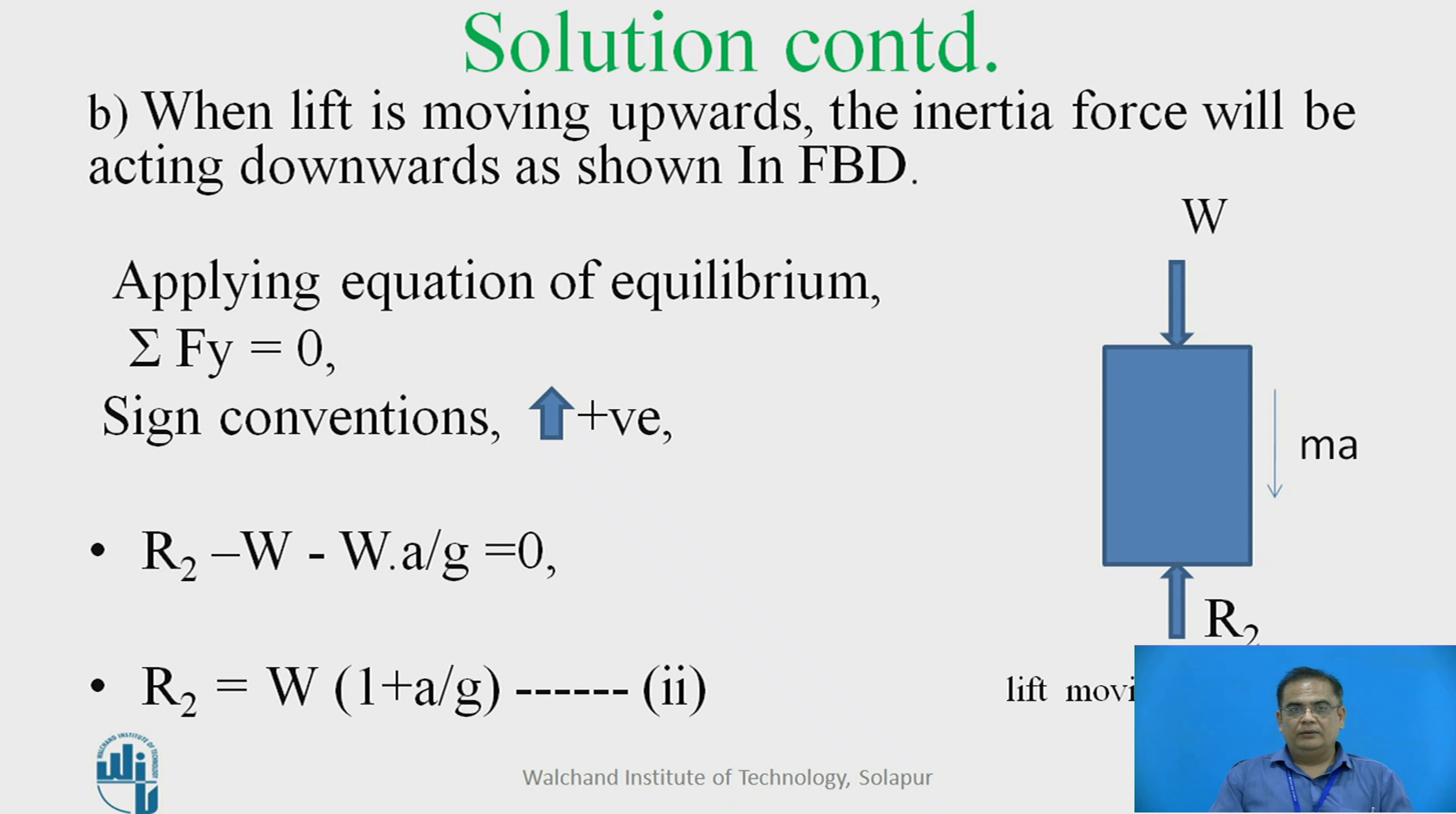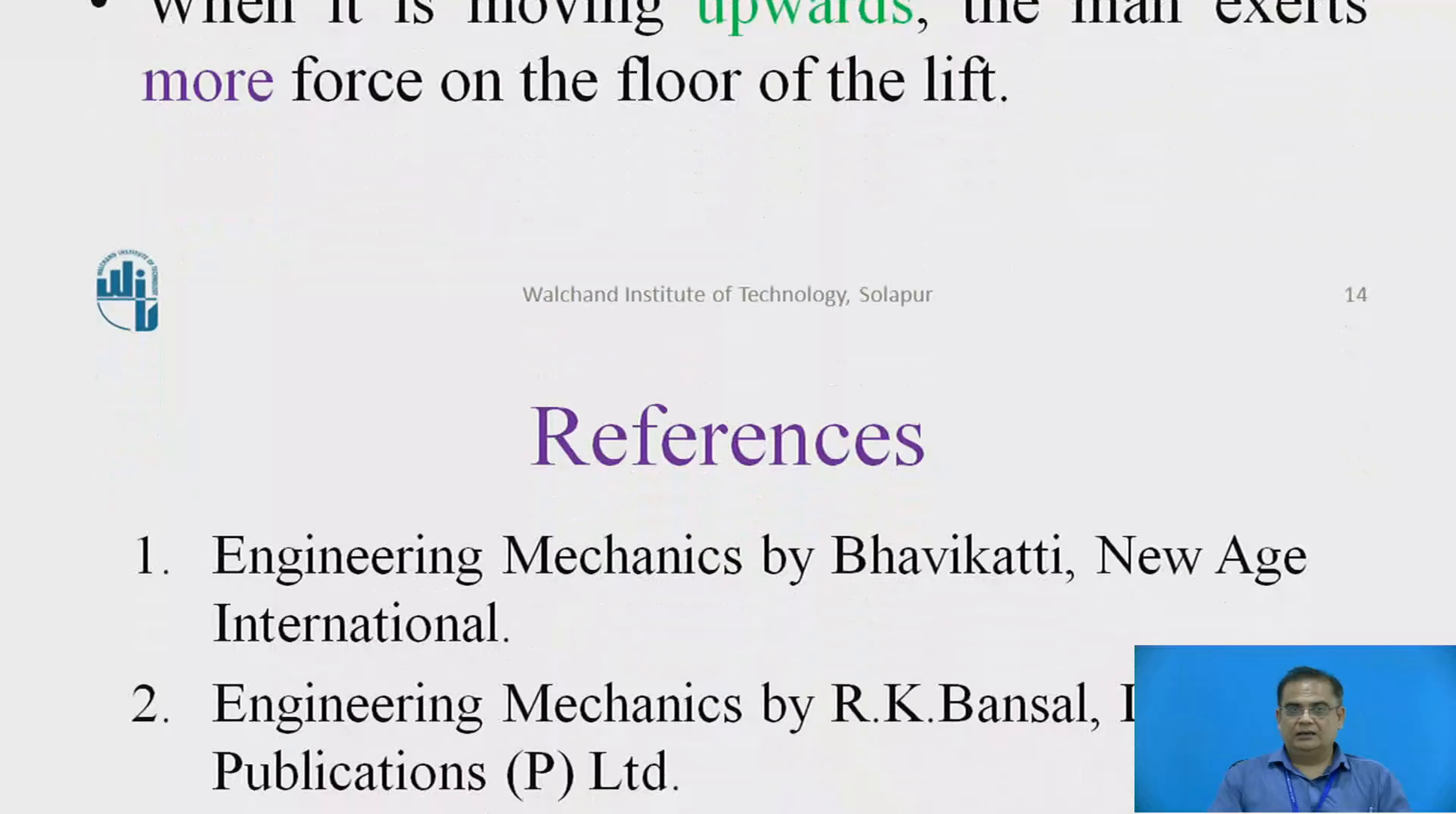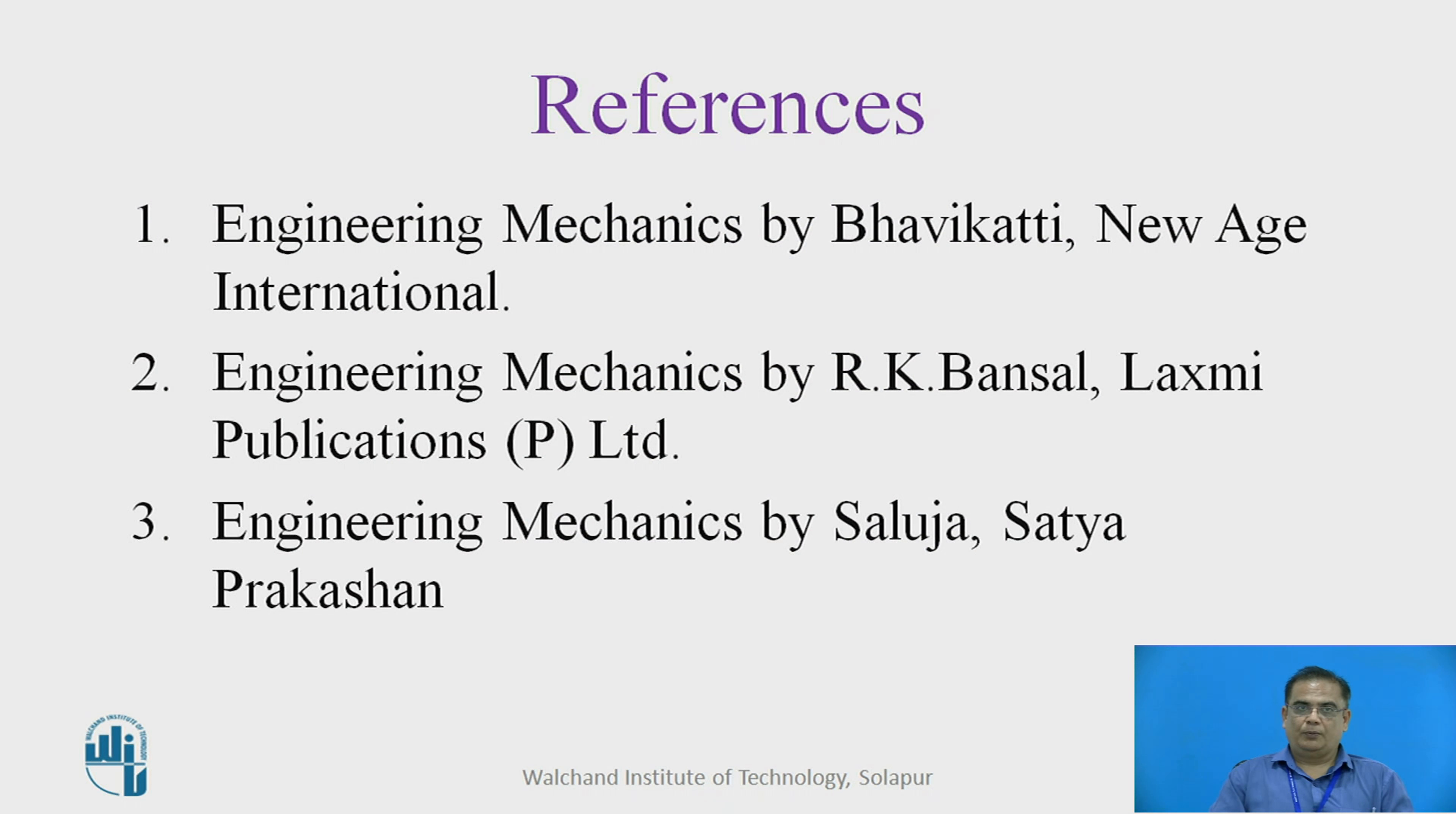Now, here one important conclusion we can draw is that when lift is moving with acceleration downwards, the man exerts less force on the floor of the lift. And when it is moving upwards, man exerts more force on the floor of the lift. This is clear from the answers obtained.